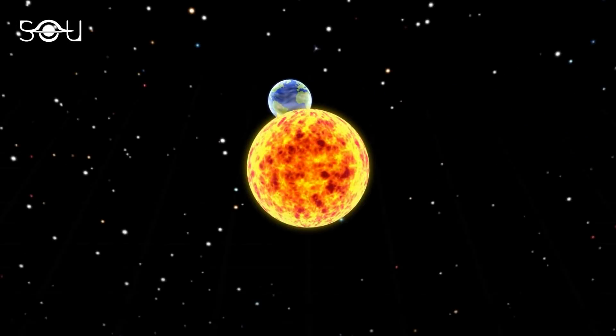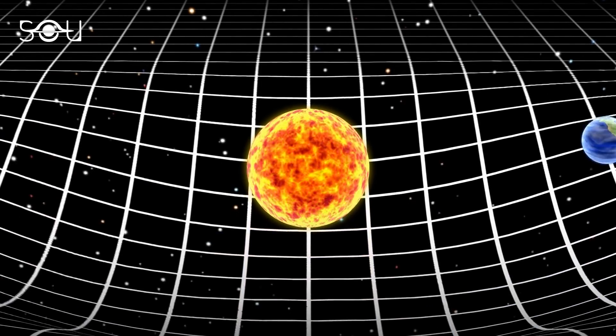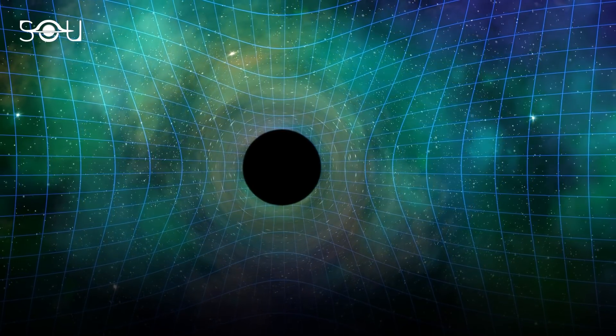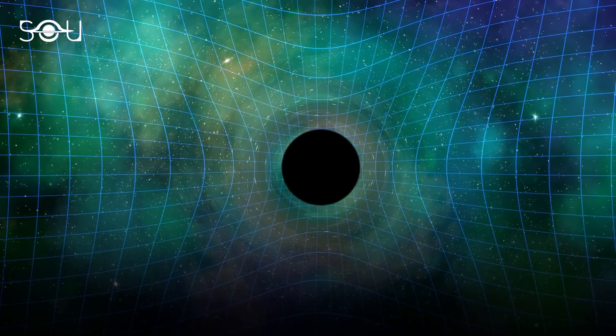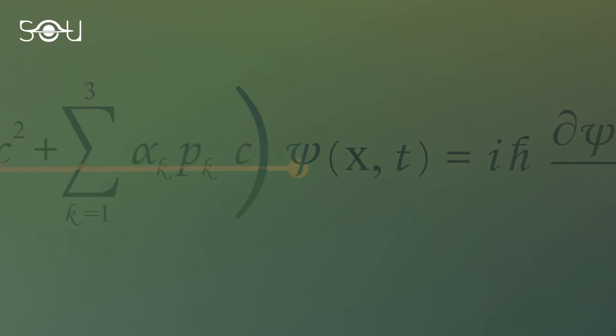However, Einstein realized that this theory was incomplete. It did not incorporate the two most important parameters of the universe, gravity and acceleration. Einstein spent the next 10 years of his life developing the general theory of relativity, which became one of the two pillars of physics, the other being quantum mechanics.